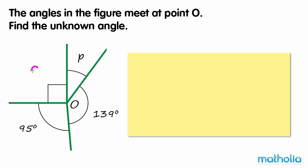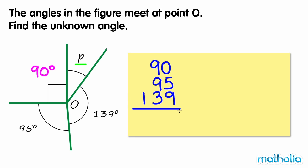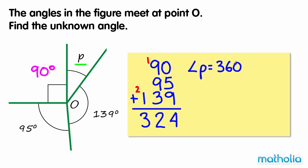Recall that a right angle is 90 degrees. The sum of the known angles is 324 degrees. Angle P is equal to 360 degrees minus 324 degrees, which equals 36 degrees. So the unknown angle is 36 degrees.